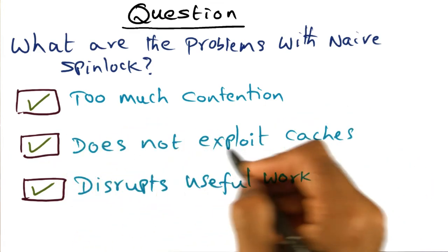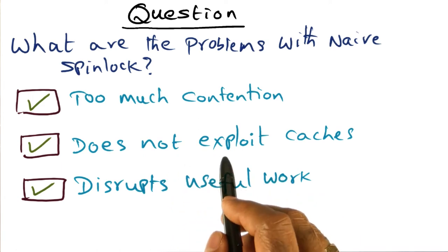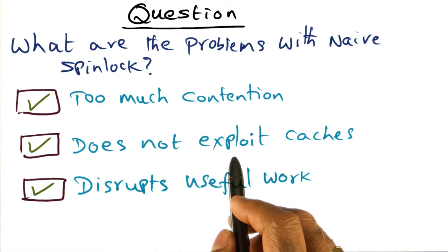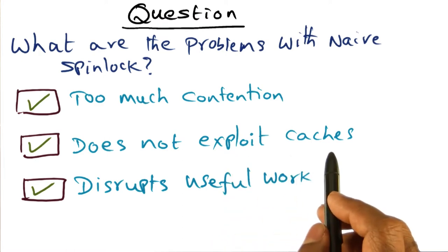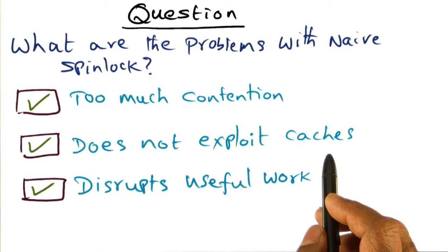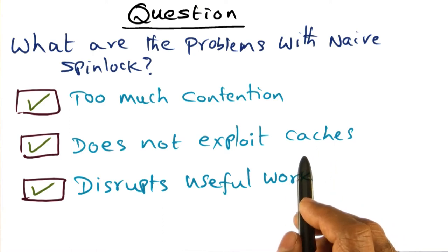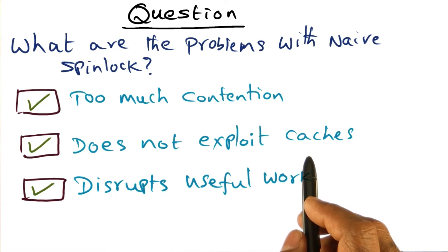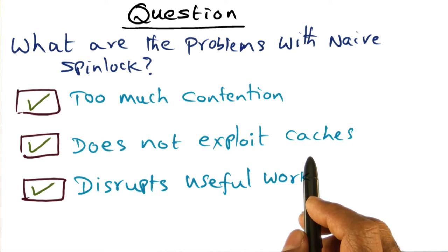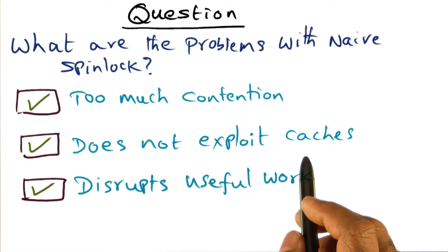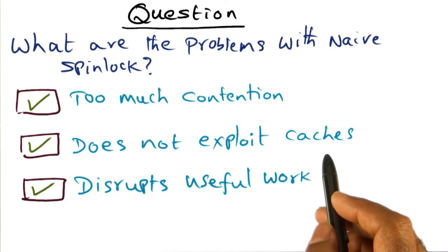Now let's talk about why the second answer is also correct. A shared-memory multiprocessor has private caches associated with every processor, and it is often the case that those caches are kept coherent by the hardware. However, the test-and-set instruction cannot use the cached value, because it has to ensure the memory value is modified atomically when inspecting memory. Therefore, by definition, a test-and-set instruction is not going to exploit caches — it bypasses the cache and goes directly to memory.